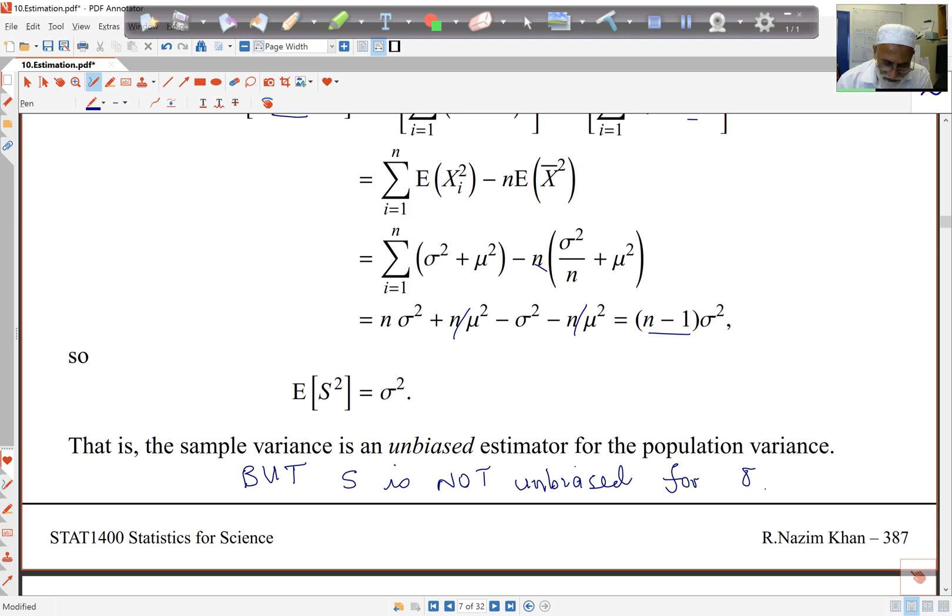What we do use is the sample standard deviation to estimate population standard deviation sigma, which is no longer unbiased, and that's important to note.